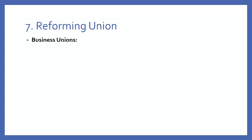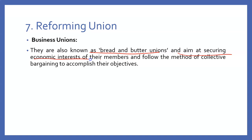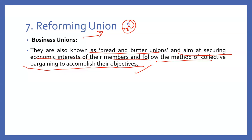Let's talk about the seventh one, called reformist union. Under this, the first category is called business union, also called as bread and butter union. They aim to secure the economic interests of their members, following the methods of collective bargaining to accomplish their objectives. These unions form across multiple companies so that all can protect each other's interests and save each other financially. Business unions focus on mutual protection of economic interests through collective bargaining.